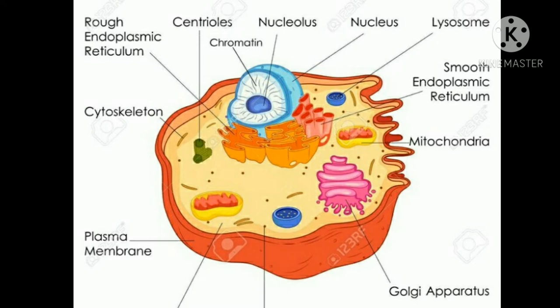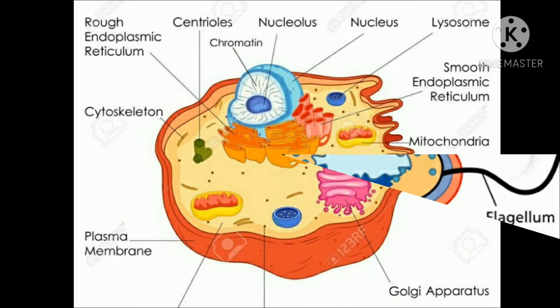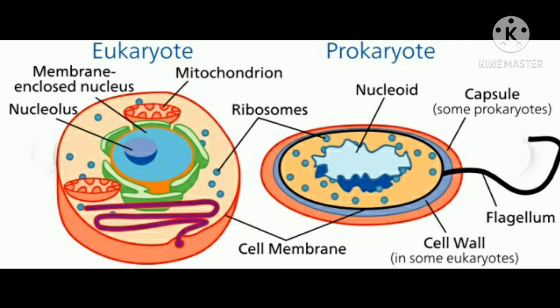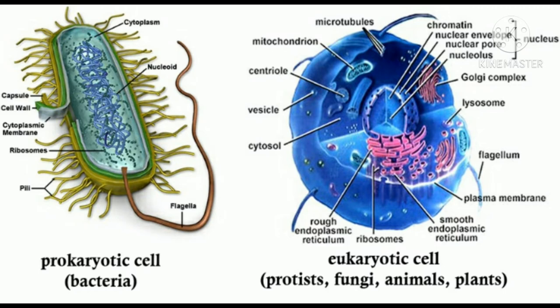These two cell types have been designated prokaryotic and eukaryotic. Organisms of each cell type are called prokaryotes and eukaryotes, respectively. Bacteria are prokaryotic microorganisms. The eukaryotic microorganisms include protozoa, fungi, and algae. Plants and animal cells are also eukaryotic. We should note one important thing: viruses are left out of this scheme of classification.